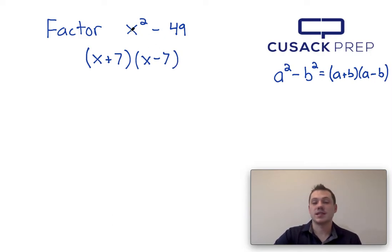So you can see it's just the square root of the first term plus the square root of the second term times the square root of the first term minus the square root of the second term. And that's it. That's how you factor x squared minus 49. Thank you for watching.